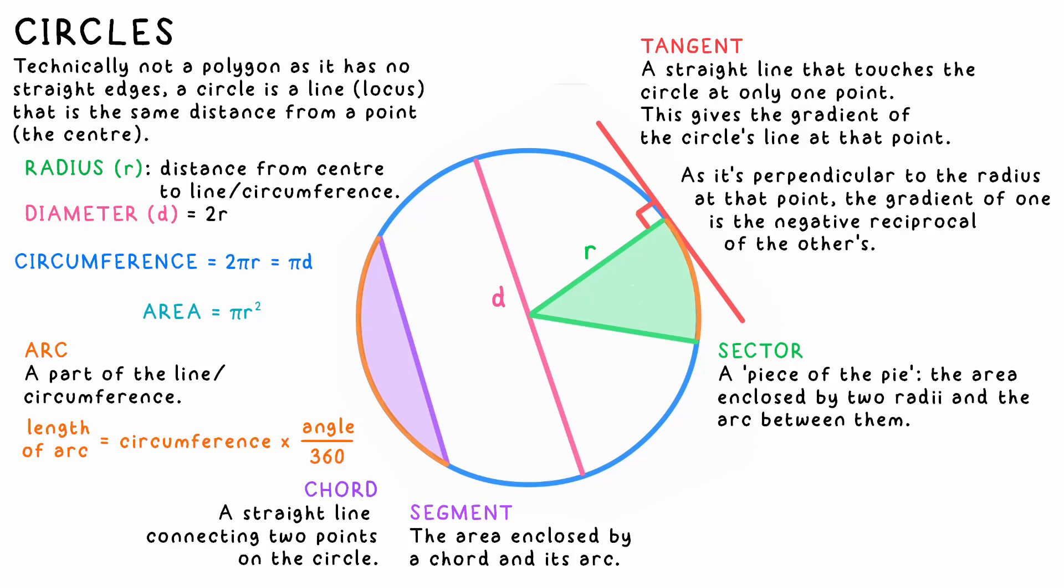The length of an arc can be calculated from the angle given. This angle will be a proportion of 360 degrees, so just find this ratio, then multiply by the total circumference. To find the area of a sector, just multiply by the total area instead.